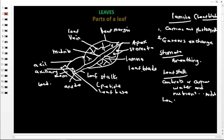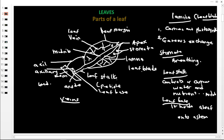The leaf stalk conducts water and nutrients from the stem to the midrib. The leaf base holds the leaf onto the stem. The leaf veins get water and nutrients from the midrib and supply them to every part of the leaf. At the same time, these veins conduct food that has been made by the leaf back to the midrib.